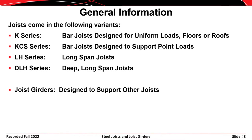Steel joists come in four different variants plus joist girders. You have a K-series joist — the default bar joist designed for uniform loads, usable in floors or roofs. There's a KCS series joist designed to support point loads, an LH series for long spans, and a DLH series for deep and long spans. A joist girder is basically a joist that supports other joists, so it tends to be deeper and stronger because it carries higher loads.